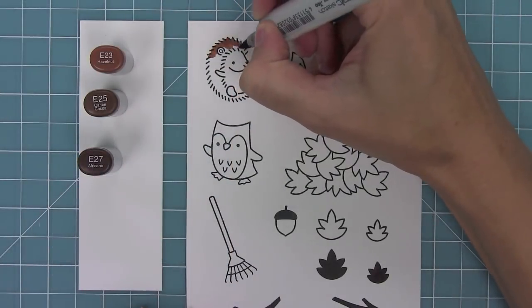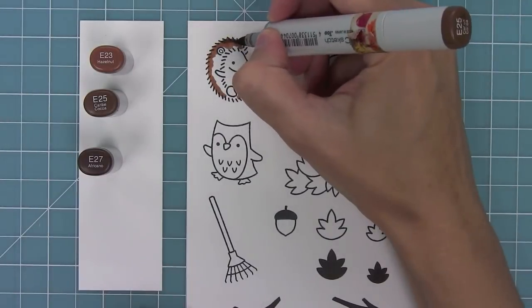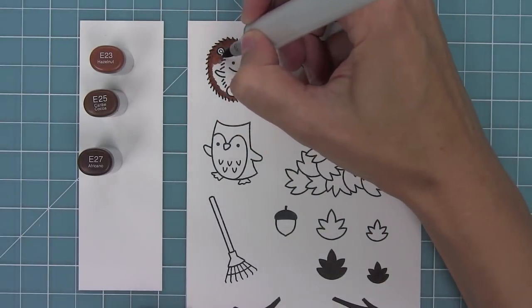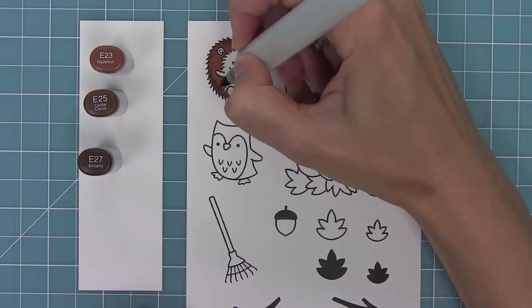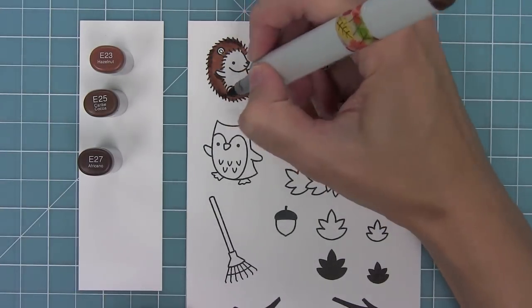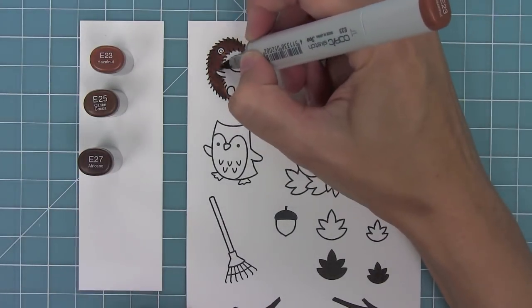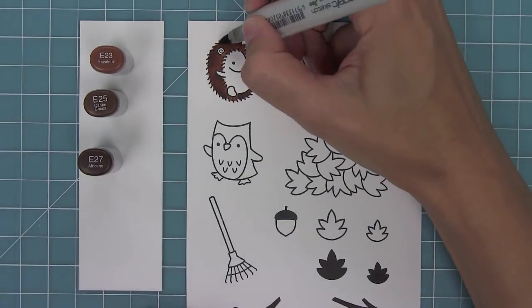First up I'm going to stamp the hedgehog from Jump for Joy and color him in with my Copic markers. I'm making the hedgehog darkest towards the outside and then lightest towards the middle, coloring into the little spikes there but leaving the top of the spikes blank so you can still see them on the outside of that dark brown.